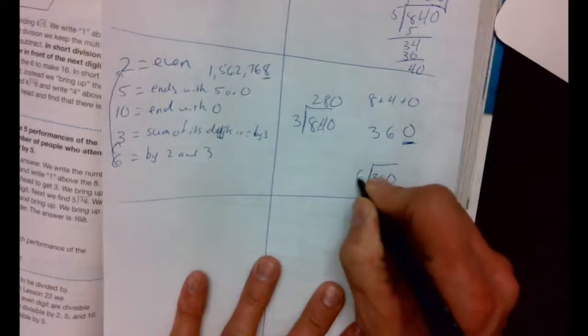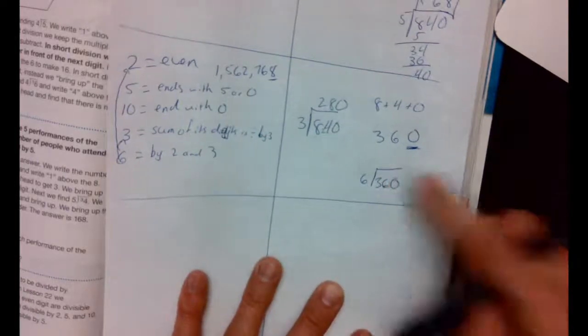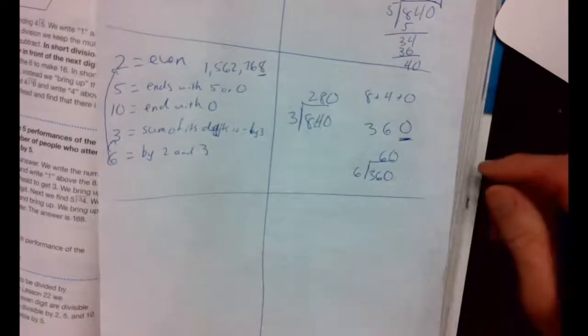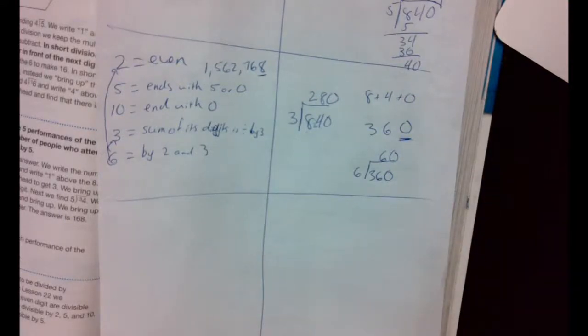Now, let's try it. See if our little rule is right. 6 goes into 36, 6 times. 6 goes into 0, 0. Sure enough, it was divisible by 6.